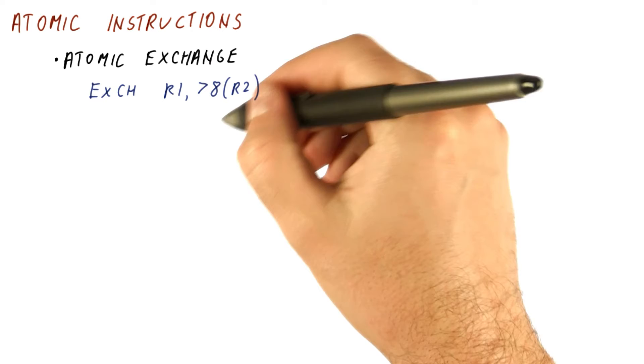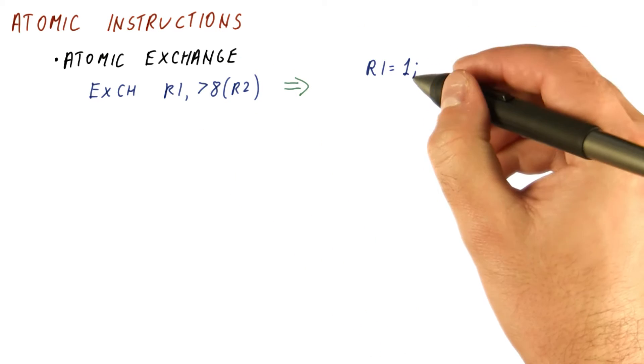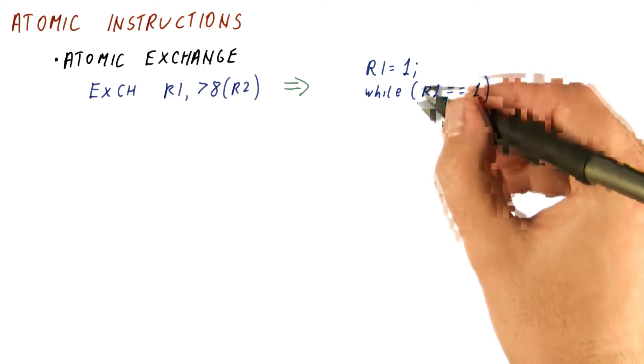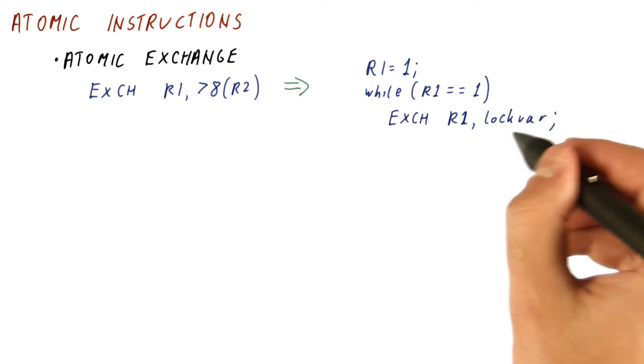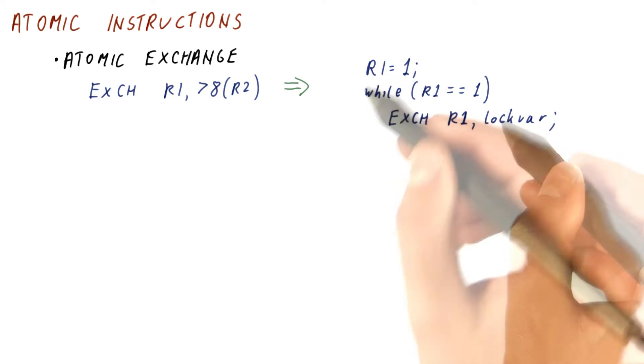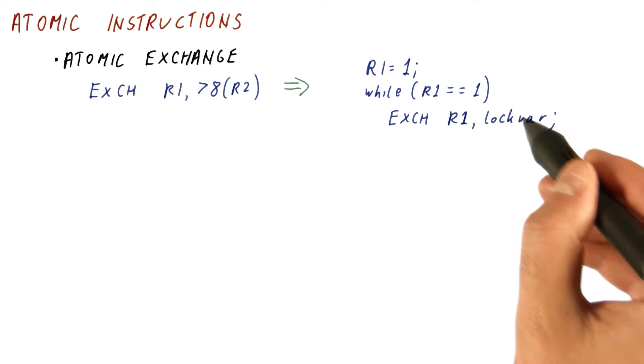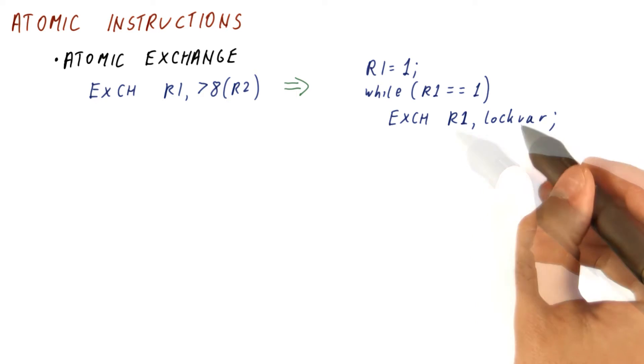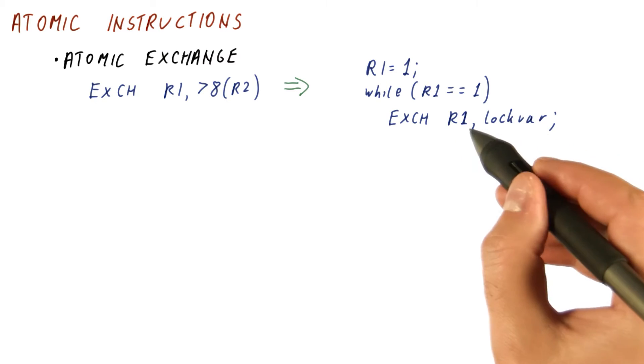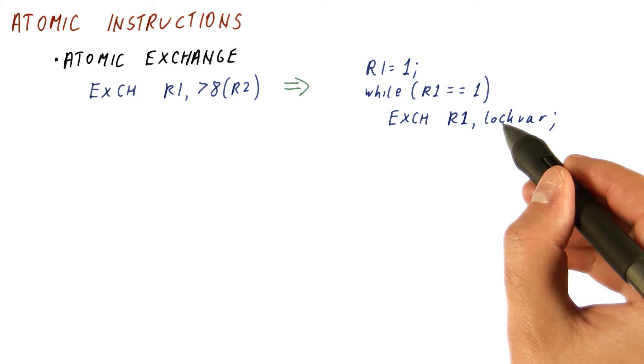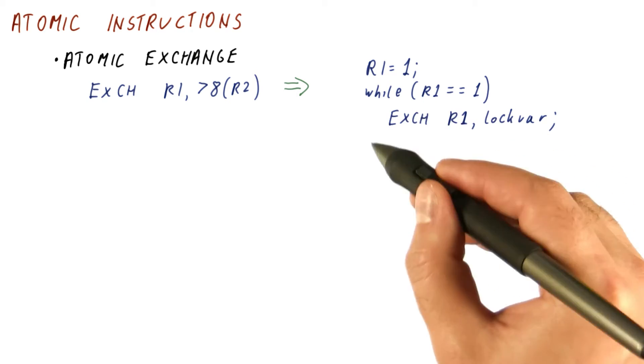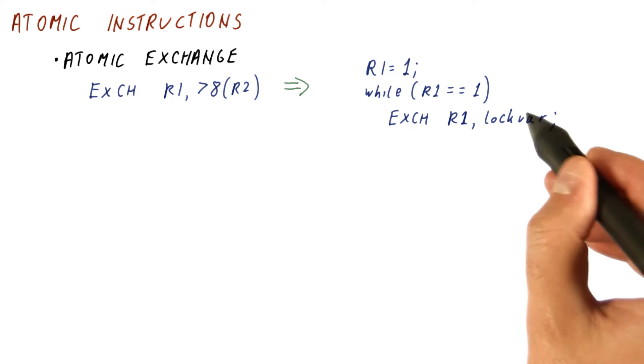If we have an atomic exchange, what we can do is put 1 into R1, and then repeatedly, as long as R1 is equal to 1, exchange R1 with our lock variable. So this is the idea. R1 being 1, we are exchanging our R1 with the lock variable. We start out with 1 in R1. When we swap them, if the memory location for the lock had a 0, it becomes 1 in the same instruction that gets us a 0. If we do get a 0, we exit this loop, and the lock variable has become 1.